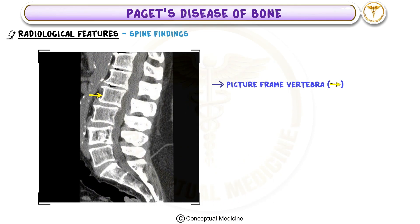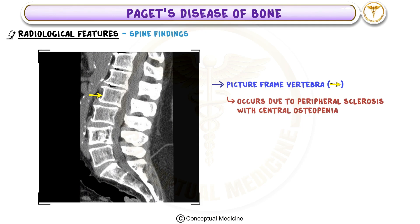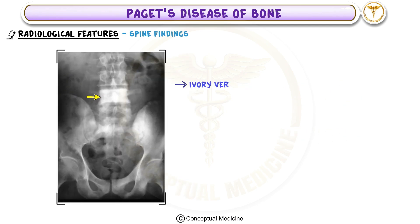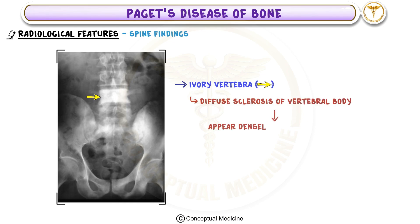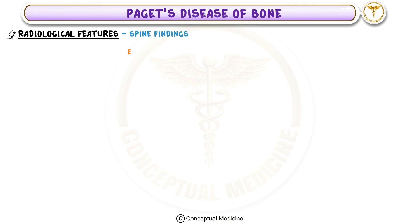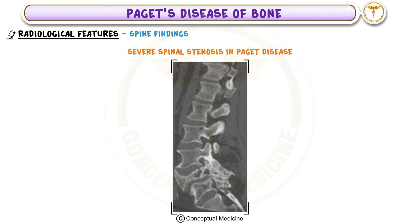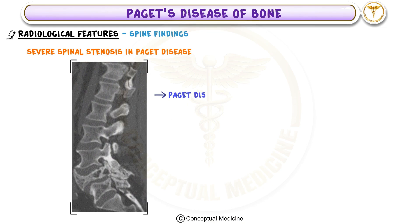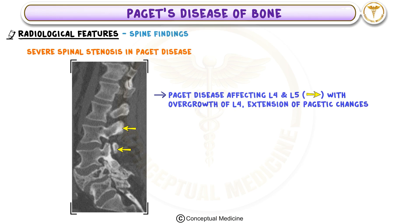Spine findings in Paget's disease include the picture frame vertebra, which occurs due to peripheral sclerosis with central osteopenia, creating an outline resembling a picture frame. The ivory vertebra refers to diffuse sclerosis of the vertebral body, making it appear densely white on x-rays. Paget's disease affecting L4 and L5 can cause overgrowth, extension into the posterior elements, and severe spinal stenosis.